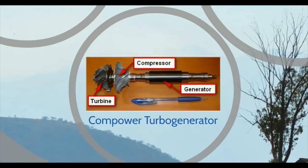The compressor, turbine, and electric generator, located on the same shaft, are called turbogenerators.